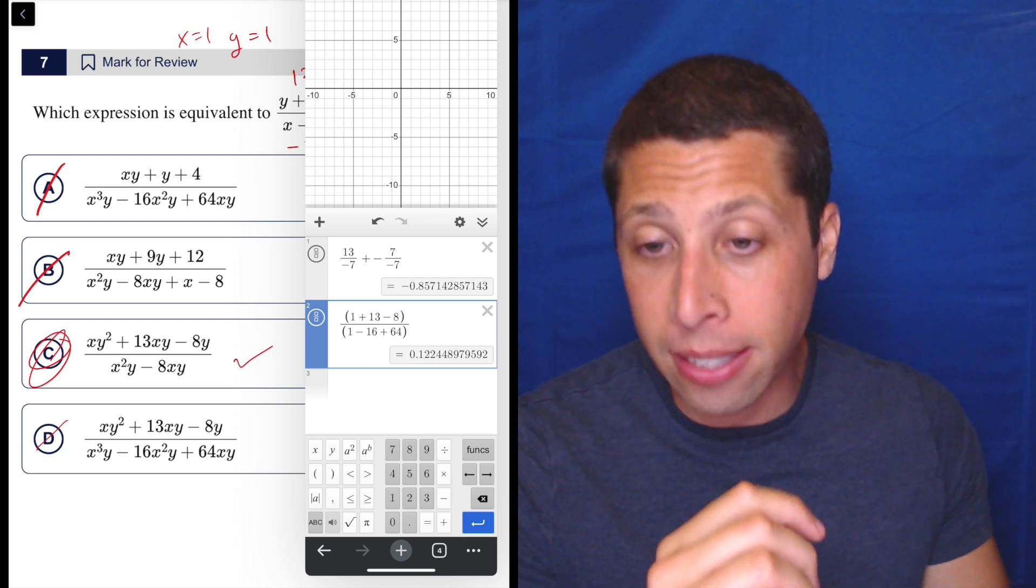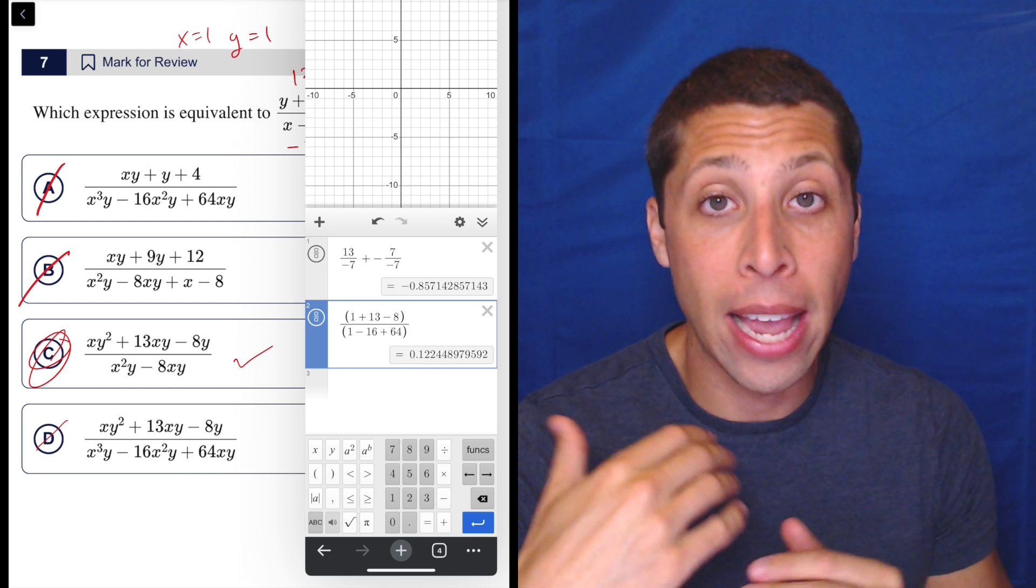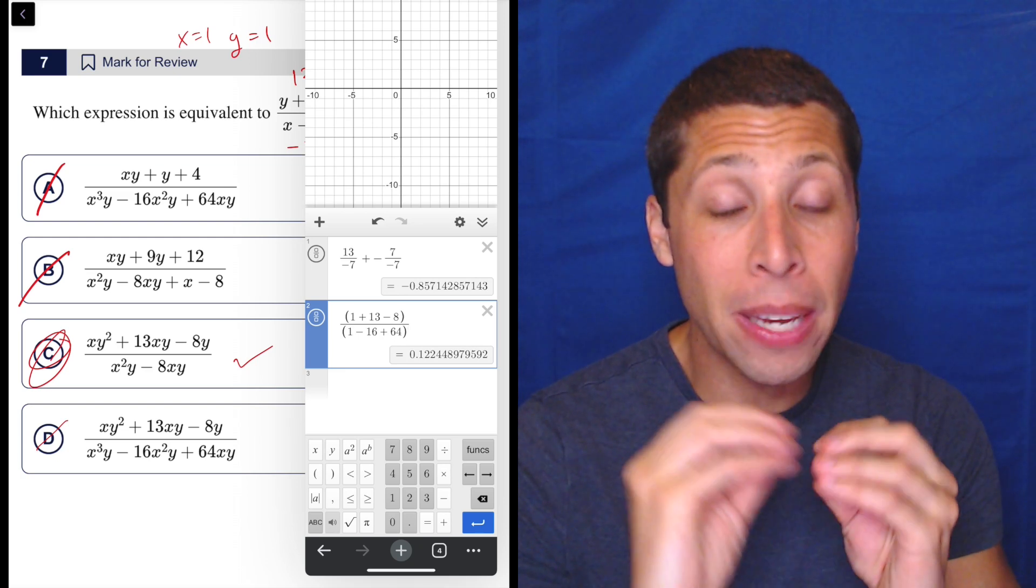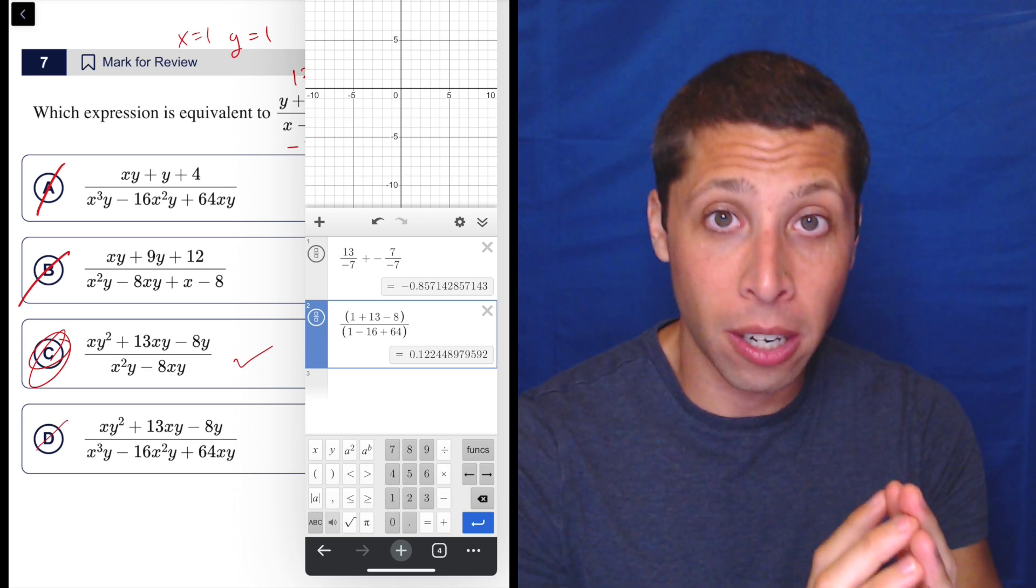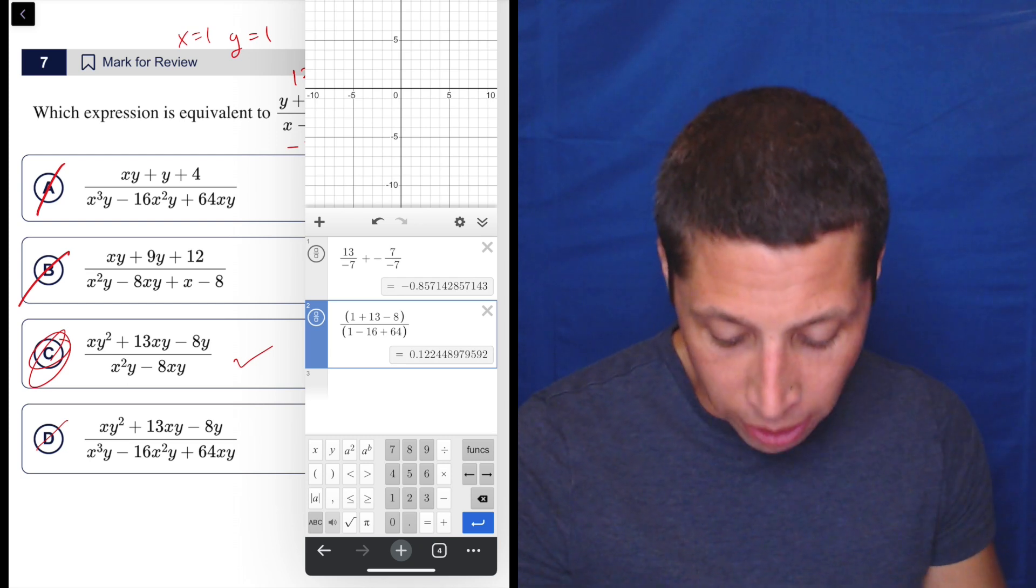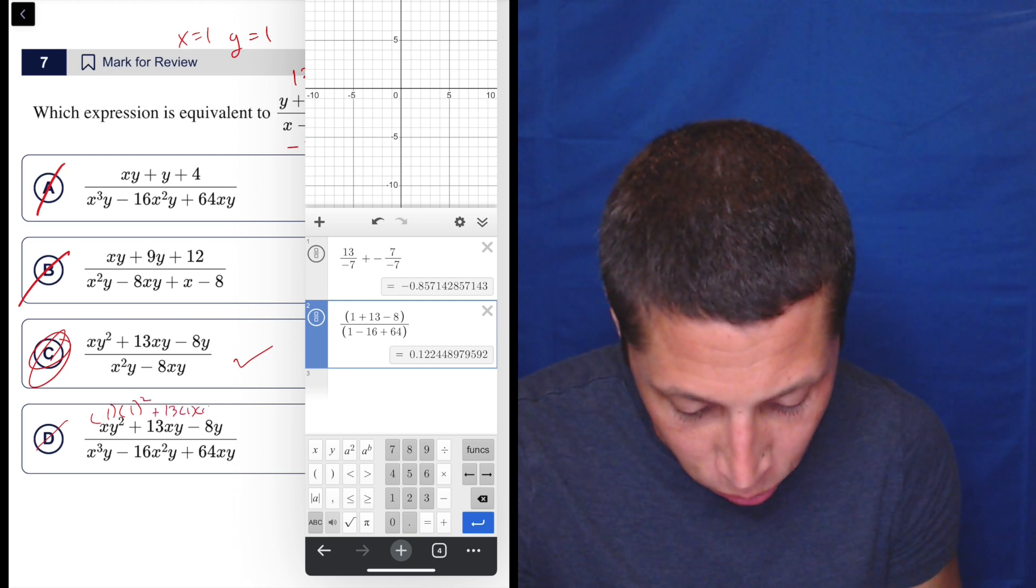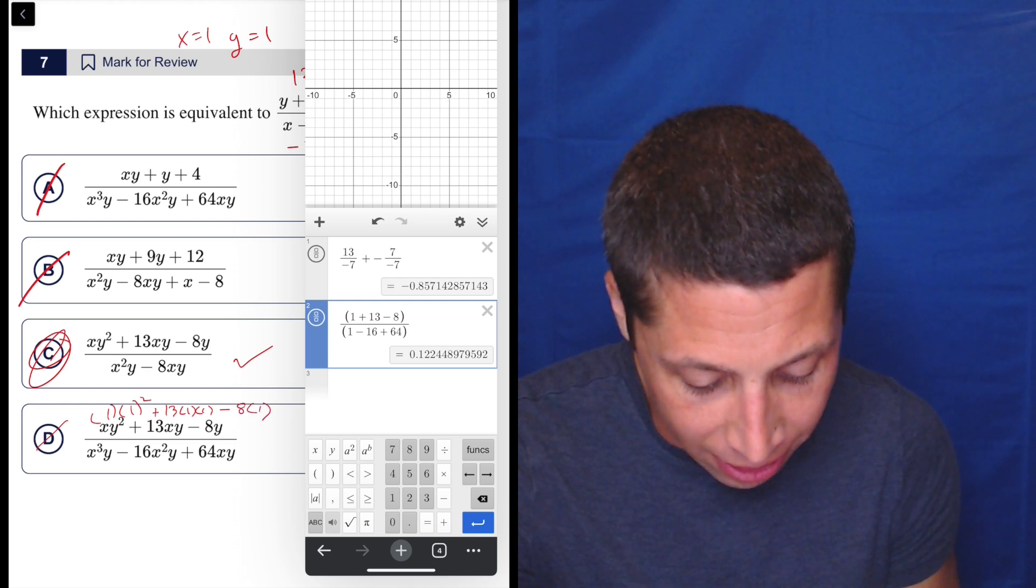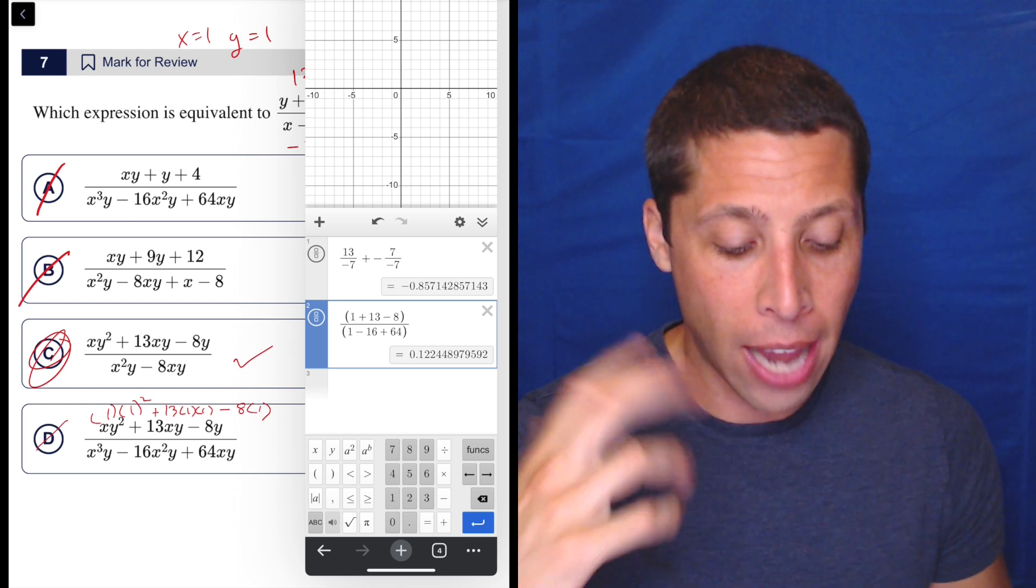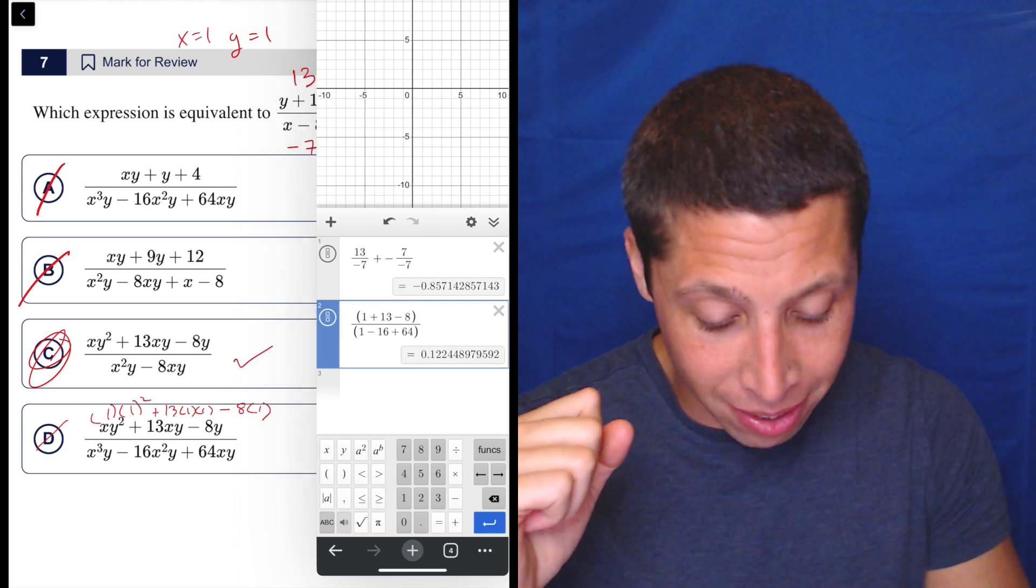Zero would have completely knocked out the denominators of all but one of these answer choices. Just choice B would be remaining, because we would have divided by zero in the others and that's not allowed. So I couldn't pick zero. Maybe I could have picked zero for X and not for Y, but to me, picking one for both was mentally easier because then I could kind of just not have to calculate anything. Again, I'm just putting them in and like in choice D, one for X, one times one squared is one. Plus 13 times one times one. That's where the 13 comes from. Minus eight times one. That's where the negative eight comes from. So if you can do that in your head, then you can arithmetize in this question very confidently. I do get that it's hard.